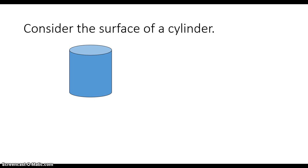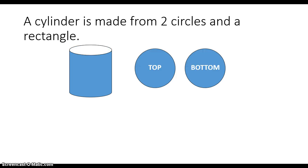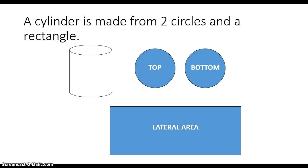Let's consider the surface area of a cylinder. A cylinder is made from two circles and a rectangle. The circles are the top and bottom, and the rectangle is the side, or the lateral area.